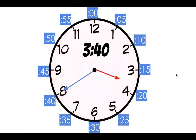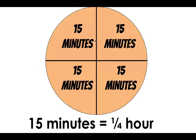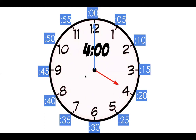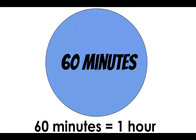Now we're at 3:35, 3:40, 3:45 - and that is our third quarter, so 15 plus 15 plus 15 minutes. Then 3:50 - I want to pause here and show you: look at how close our hour hand is to the four. It's not on the four yet, though, because just like the minute hand, it's moving its way around the clock. So it is still in the hour of three and it is 3:50. Three fifty-five, it's even closer. And now we have made it a whole hour to four o'clock, which is 60 minutes.